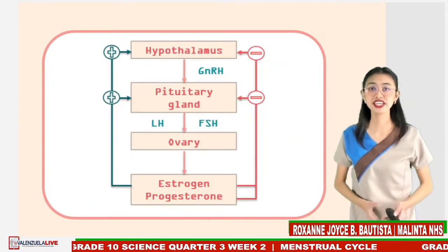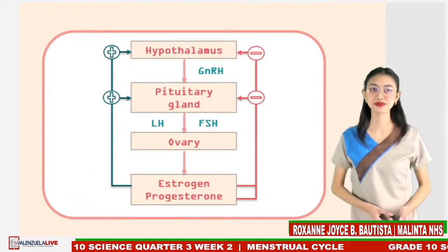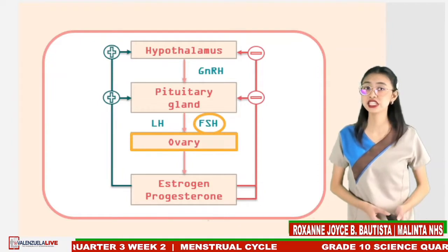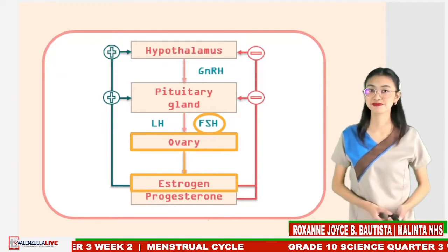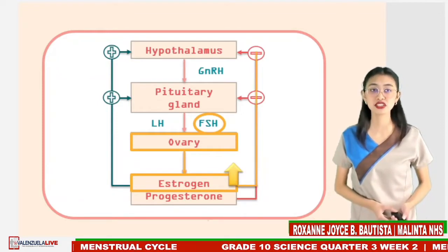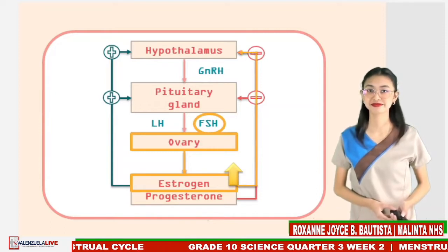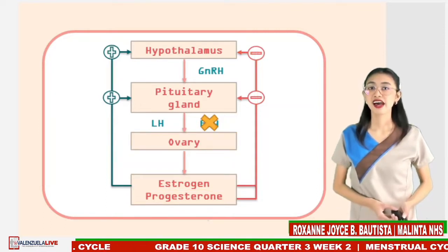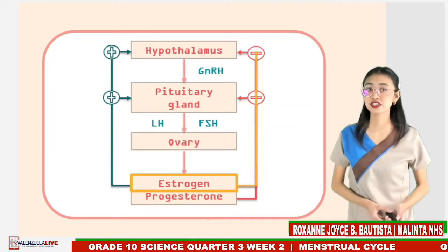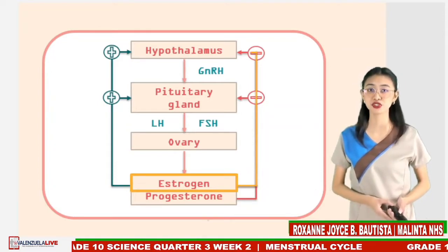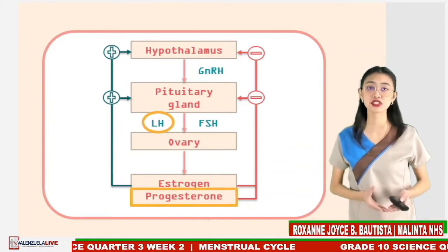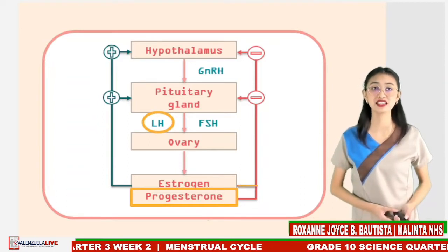Here is an example of negative feedback. The follicle-stimulating hormone stimulates the ovaries to release estrogen. High levels of estrogen can prevent the further production of the follicle-stimulating hormone. Estrogen also fuels the production of the luteinizing hormone, which in turn controls the production of progesterone. High levels of progesterone stop the further release of the luteinizing hormone.